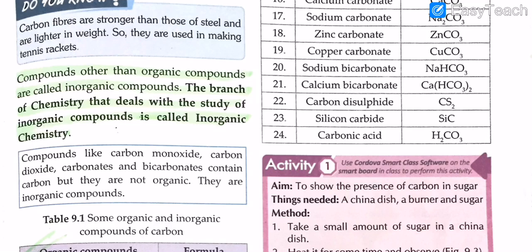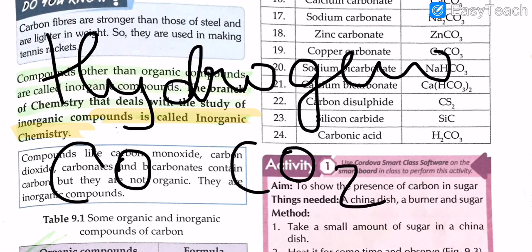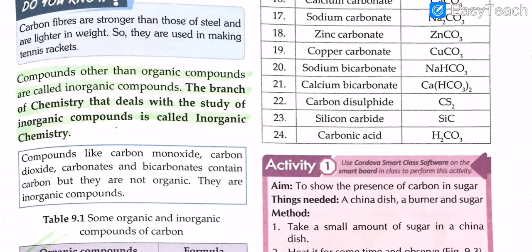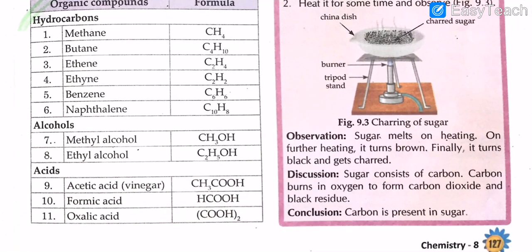Compounds other than organic compounds are called inorganic compounds. The branch of chemistry dealing with inorganic compounds is known as inorganic chemistry. Compounds like carbon monoxide, carbon dioxide, carbonates, and bicarbonates contain carbon but are inorganic compounds because hydrogen is missing. Carbon monoxide is CO, carbon dioxide is CO₂ — none of them have hydrogen, which is why they are inorganic.